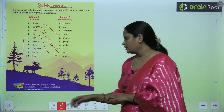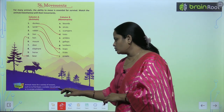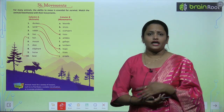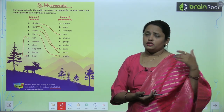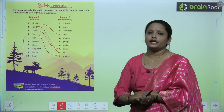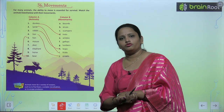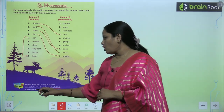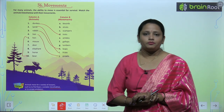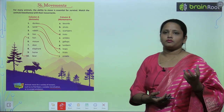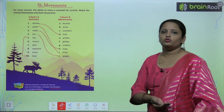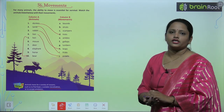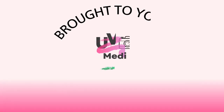Food ko find out karne ke liye. A suitable micro habitat — aisi jagah ko find out karne ke liye jahan pe hoon. For example, jab north mein bohot zyada thund badhne lagti hai, to animals south ki taraf move kar jate hain. Also to escape predators — jungle ke janvar apne shikariyon se bachne ke liye bhi apni jagah ko change karte hain.